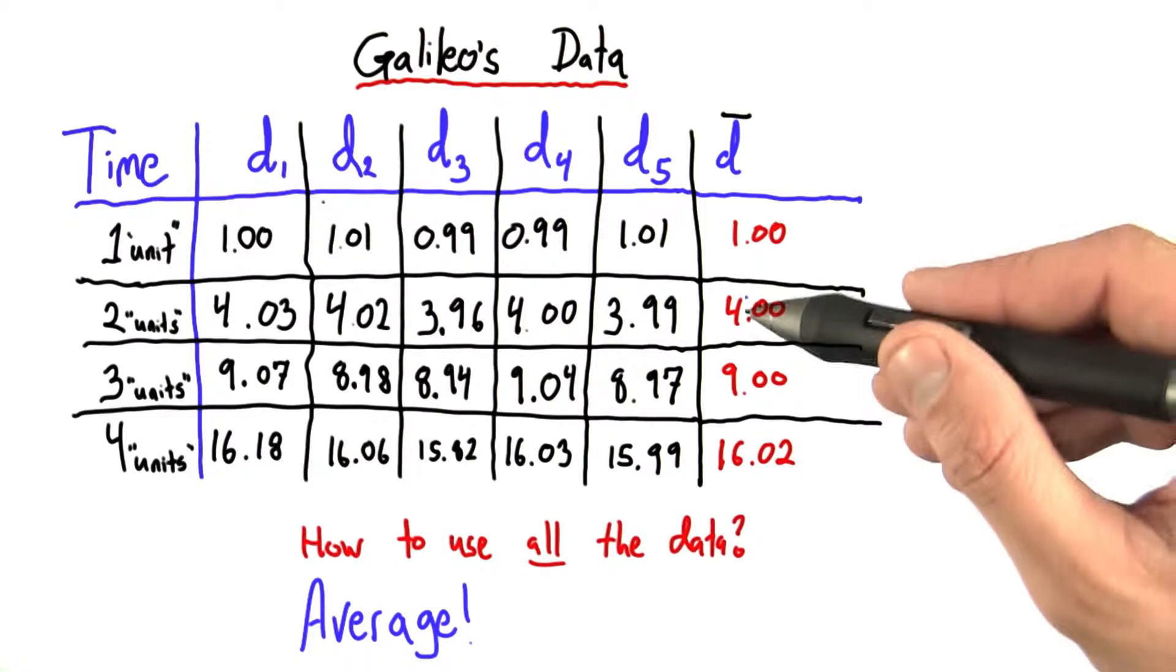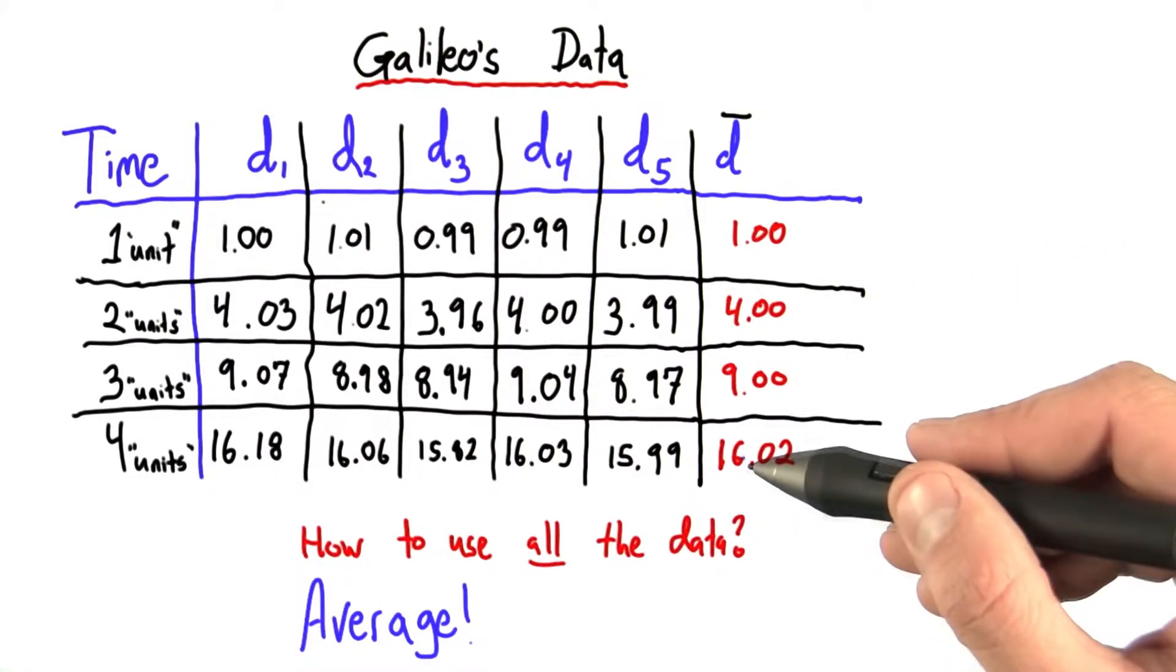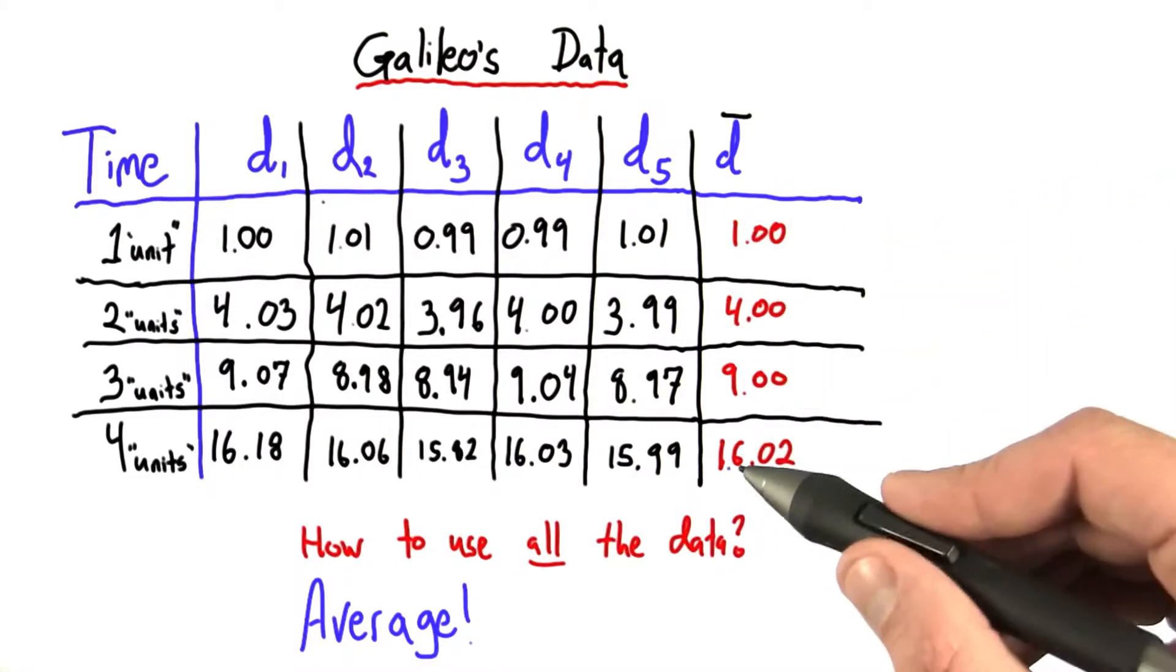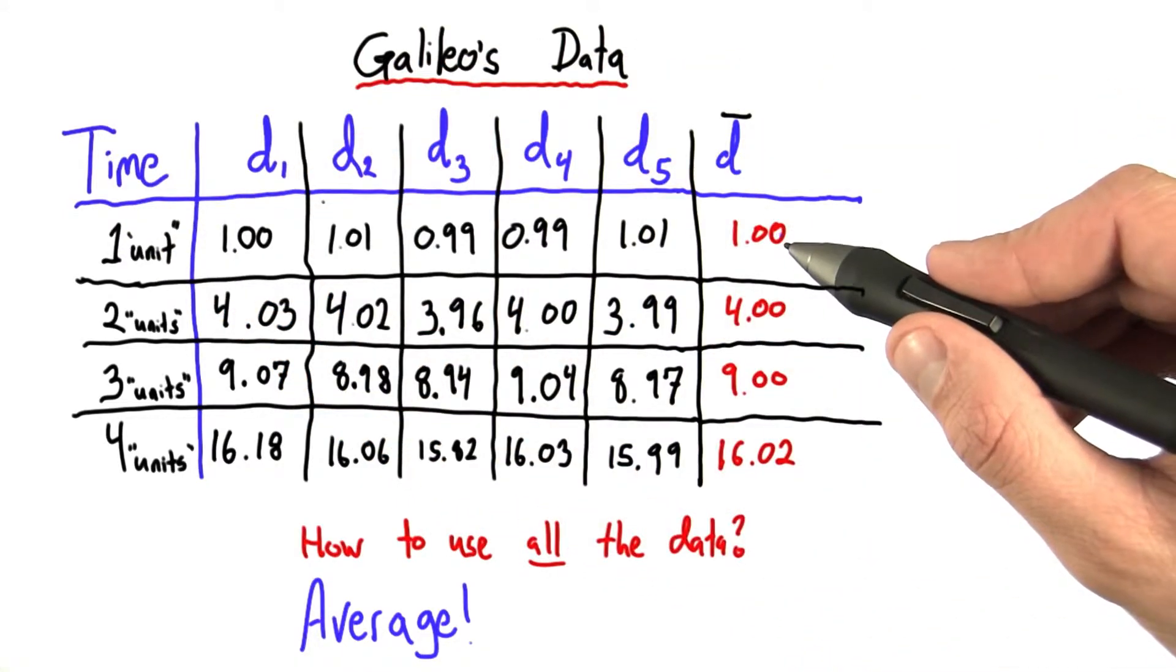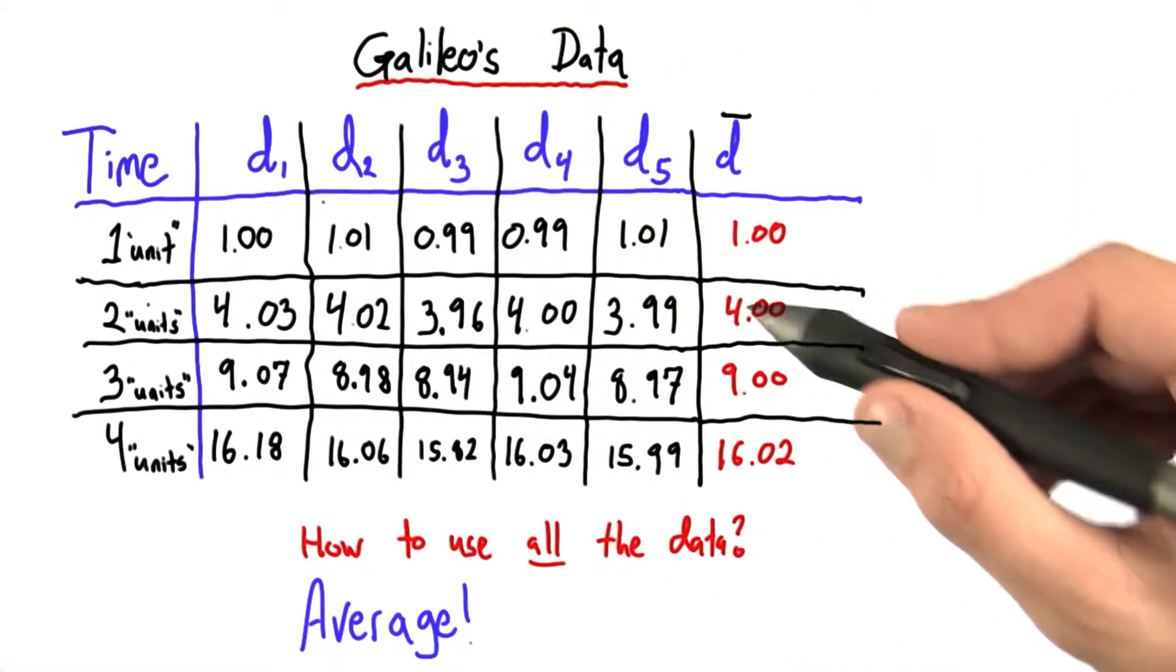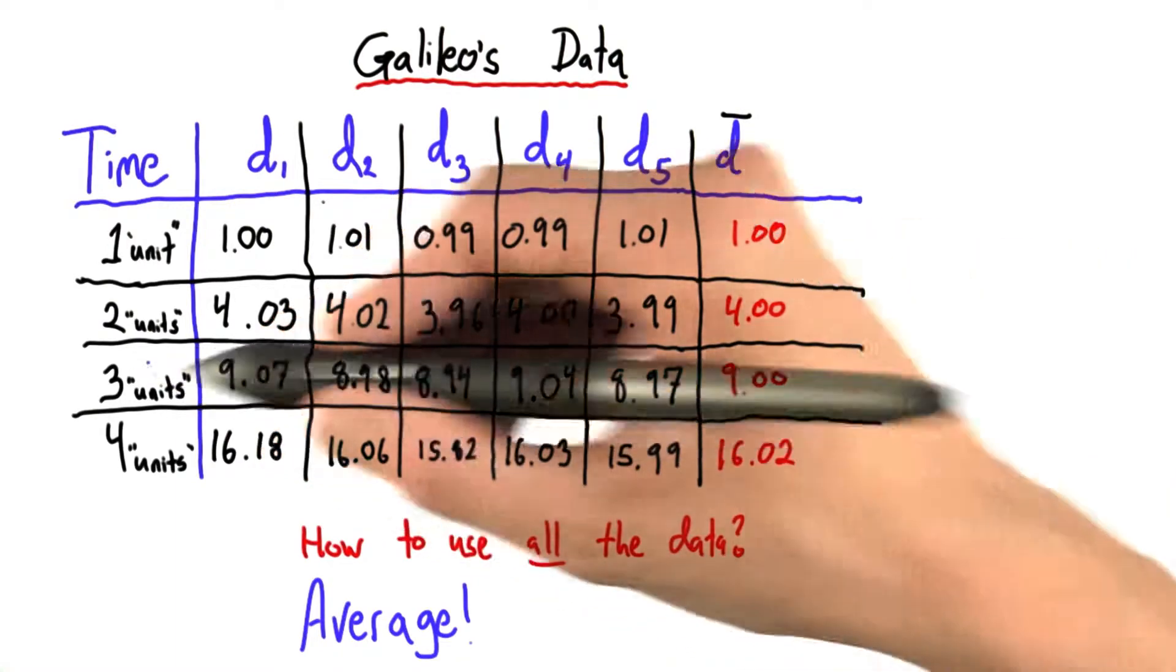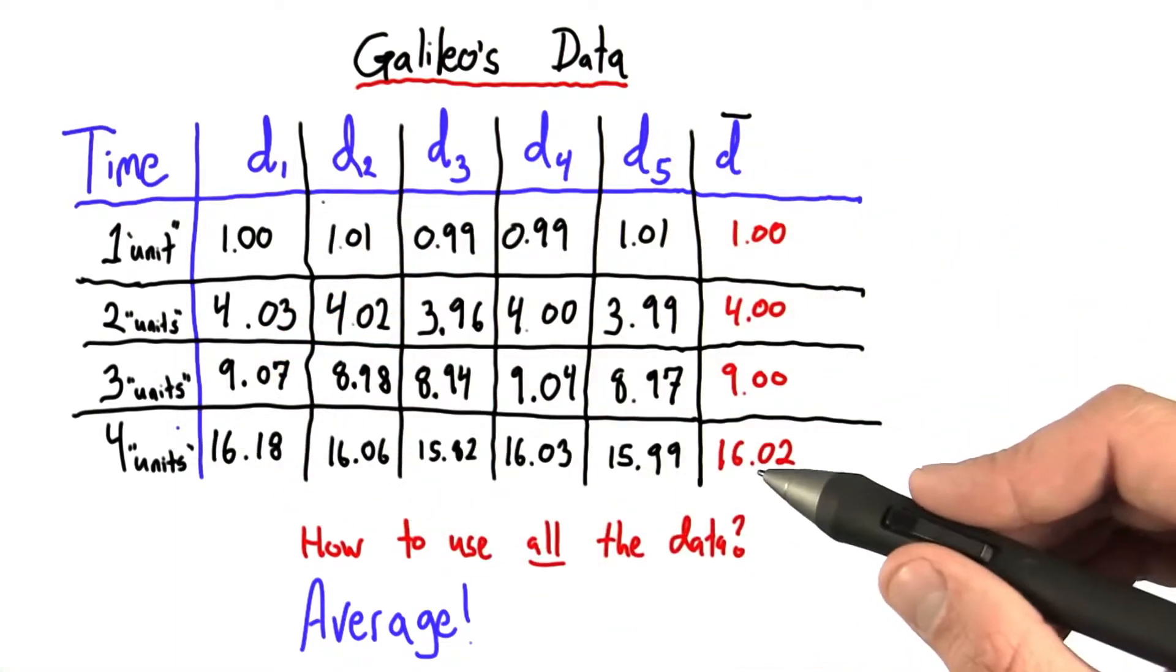Well, 1, 4, 9, 16, I do see a pattern there. These are squares. 1 unit, 1 unit of time, squared is 1. 2 squared is 4. 3 squared is 9, and 4 squared is 16.